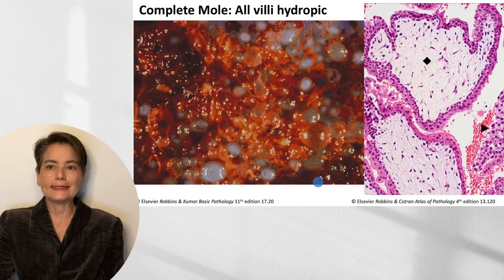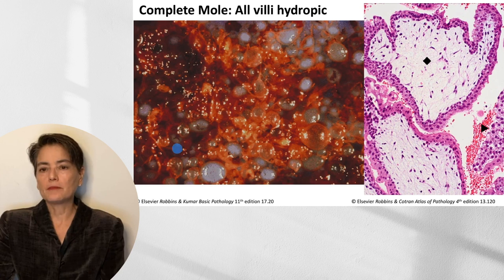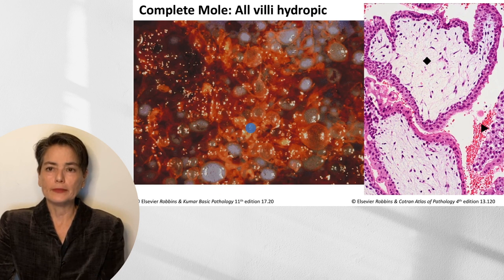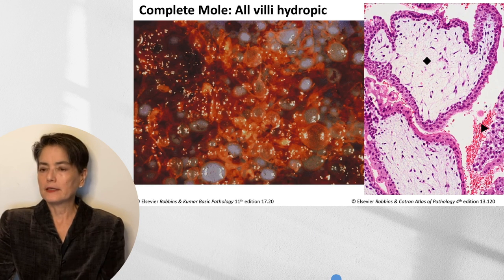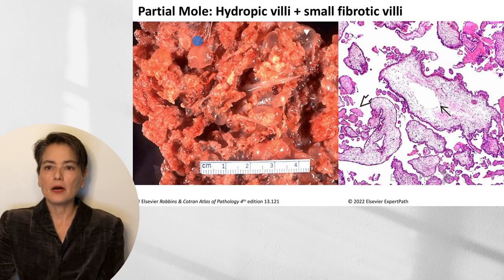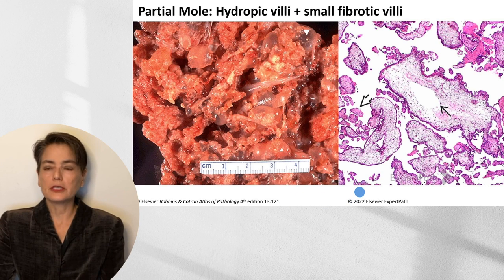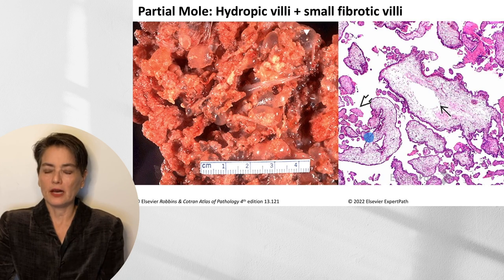Visually, the complete mole has vesicles filled with fluid — this is where the term hydatid comes from — sometimes referred to as looking like a bunch of grapes, with the entire placenta composed of bubbles of clear fluid. Histologically, all of the villi are enlarged and somewhat edematous. In contrast, a partial mole shows some hydropic villi alongside areas that have the appearance of a healthy placenta with a somewhat shaggy, velvety look. On histology, we can appreciate enlarged hydropic villi with cisterns — the edema fluid splays apart the mesenchymal cells — and admixed small fibrotic villi, giving two populations.